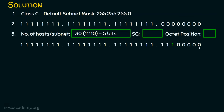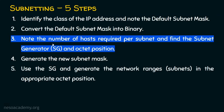The position of the first 1 encountered from the right — at decimal value 32 — is the subnet generator. So the subnet generator is 32. This first 1 is not in octet 1, 2, or 3; it is in octet 4. So the octet position is 4. We have now completed step three: subnet generator = 32, octet position = 4.